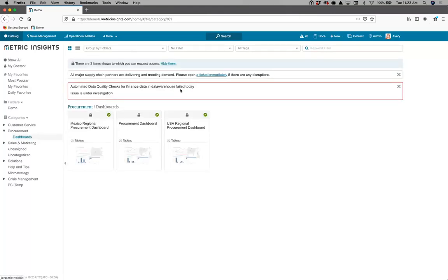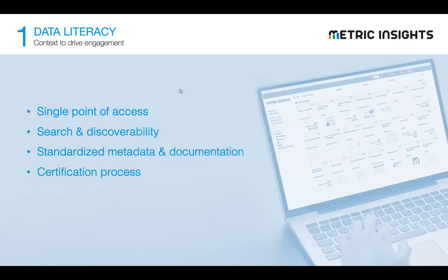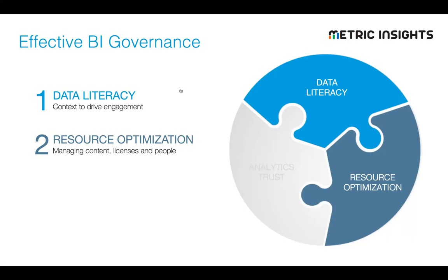That really covers this first phase: single point of access, balancing discoverability so I can search for things, utilizing metadata and documentation to add context, and making sure we've certified the content we really want people to be looking at. I think you got a sense that to achieve this, it's not just about technology — it's a combination of aligning the tools with the right process. So the next piece of the puzzle is about optimizing resources: managing content, licenses, and people to make optimal use of the scarce resources you have to generate business value.